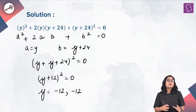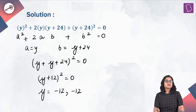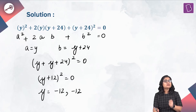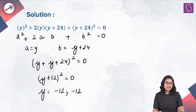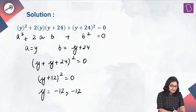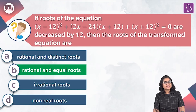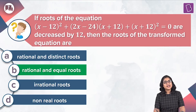What can we comment about these two roots? Clearly we can say that they are equal and we can also say that they are rational. Hence, option B is the correct answer to this question: rational and equal roots.